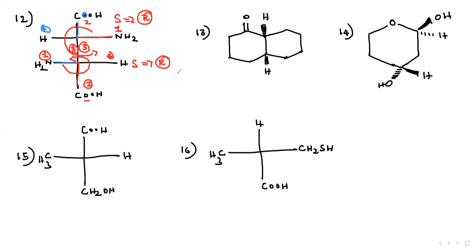Now this carbon — see the numbering, very important. This first carbon, this is second, it is third, it is fourth. Do the numbering and rotation: 1, 2, 3 — this is anti-clockwise. Anti-clockwise gives S. This is second, this is third. Again 1, 2, 3 — anti-clockwise. So the answer is S.